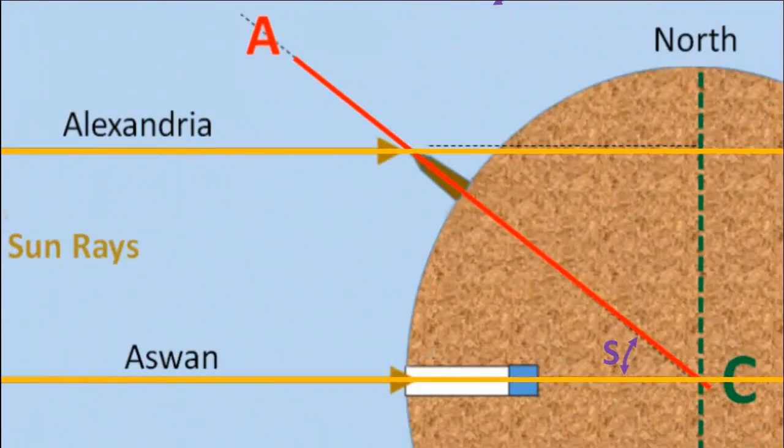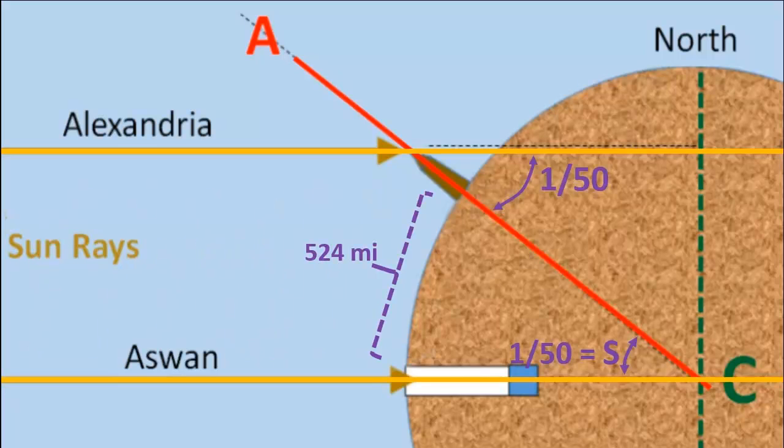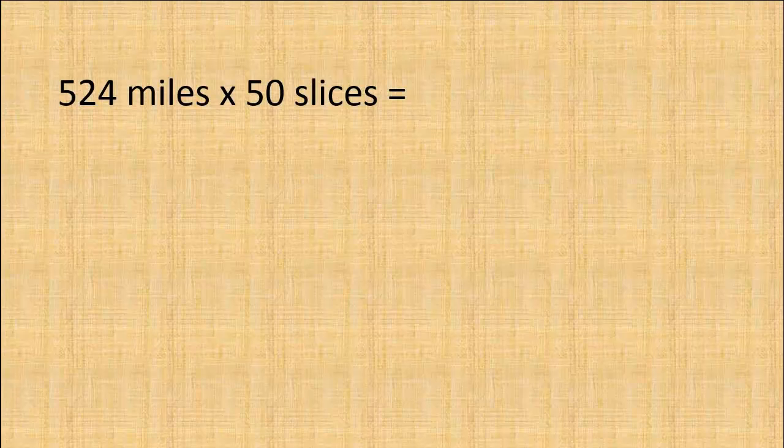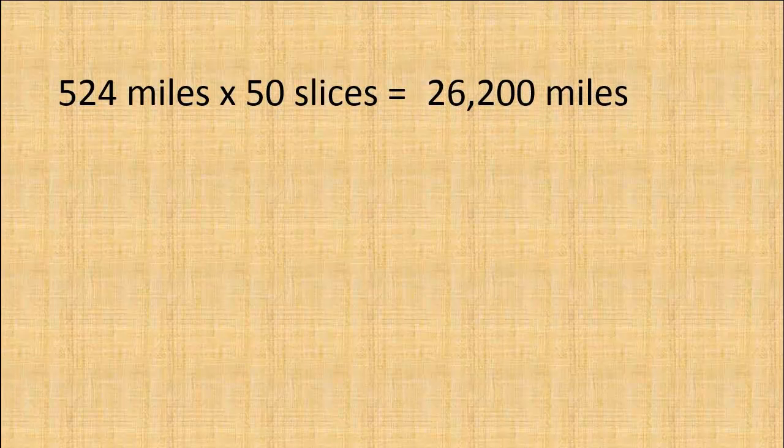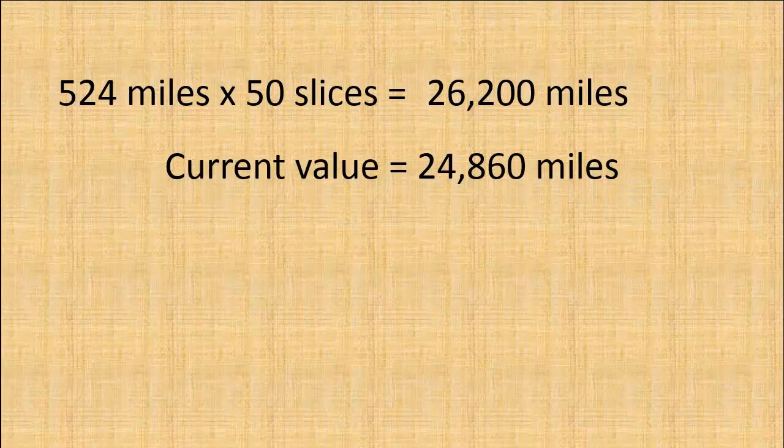Using Euclid's proof that alternate interior angles of a transversal across parallel lines are equal, he then knew that the central angle between Aswan and Alexandria was 1/50th of a circle. And the distance along the earth was 524 miles. Eratosthenes would have reasoned that if one pizza slice at angle 1/50th was 524 miles along the outer edge, then two pizza slices fitted together would have a total central angle of 2/50ths of a full circle. And the distance would be doubled to 1048 miles. So using this method, he would have multiplied the 524 miles by 50 slices to estimate the distance around the entire earth. That equals 26,200 miles around the earth. The current value is 24,860 miles.